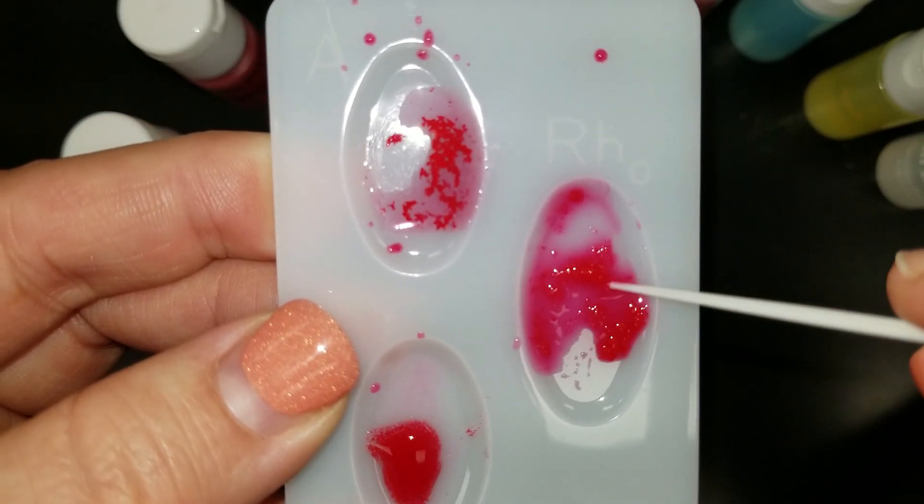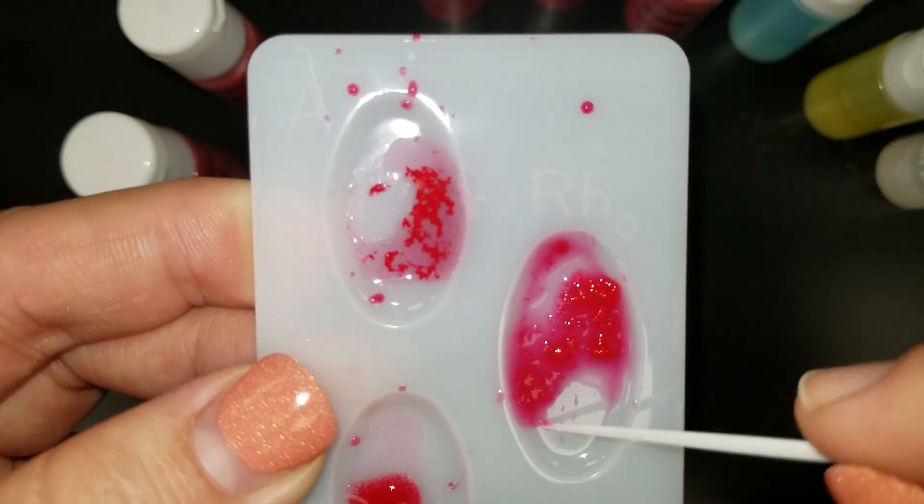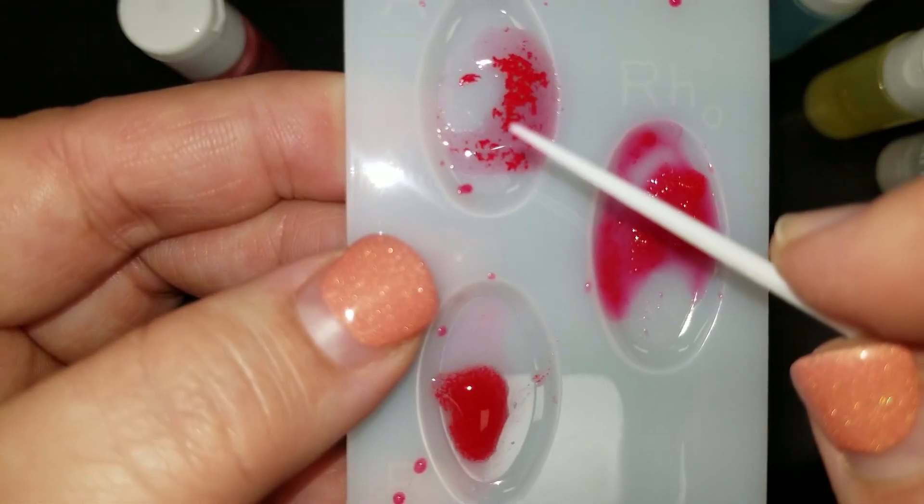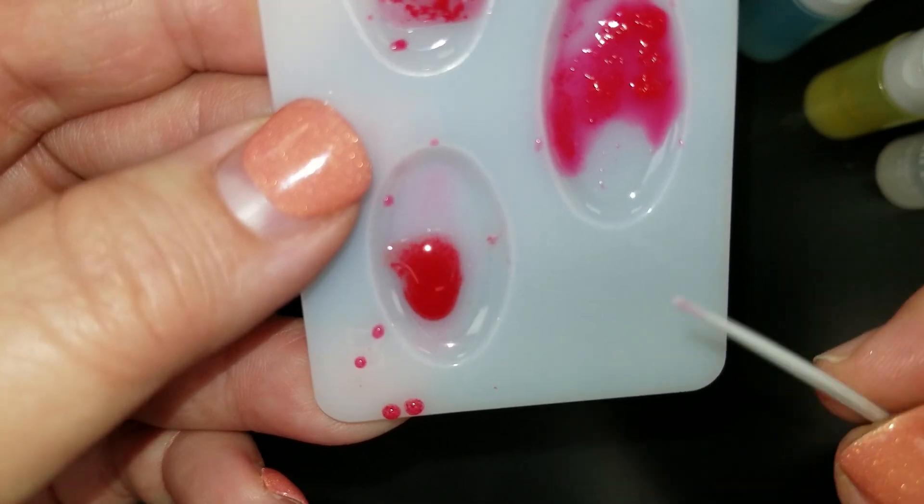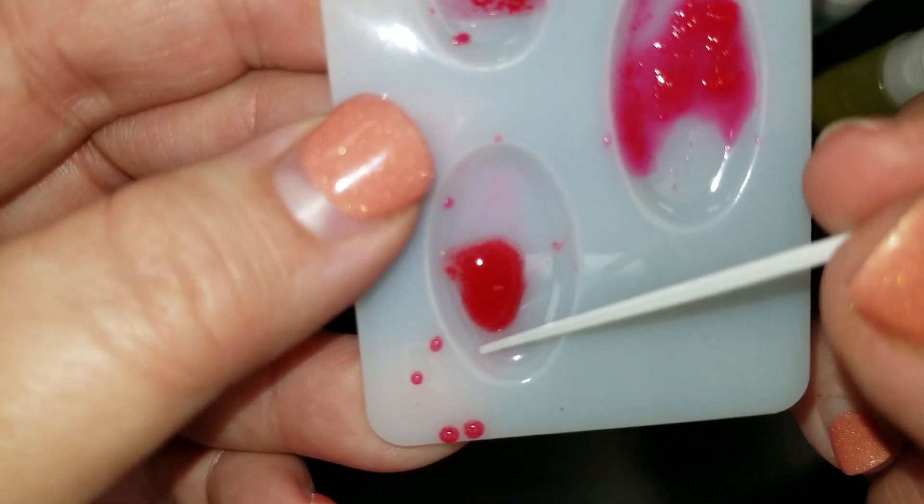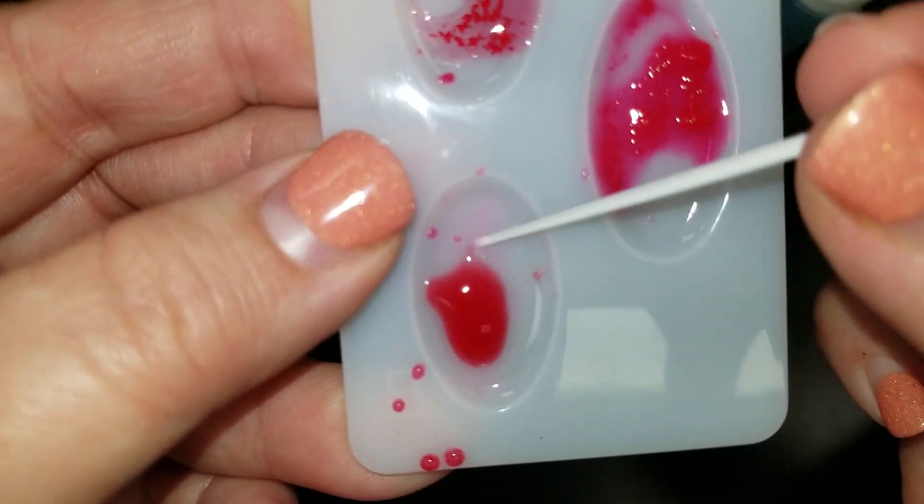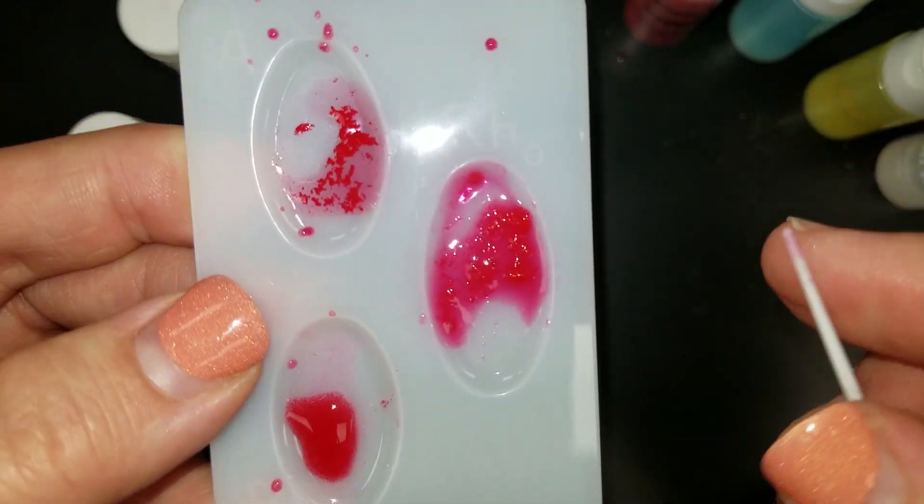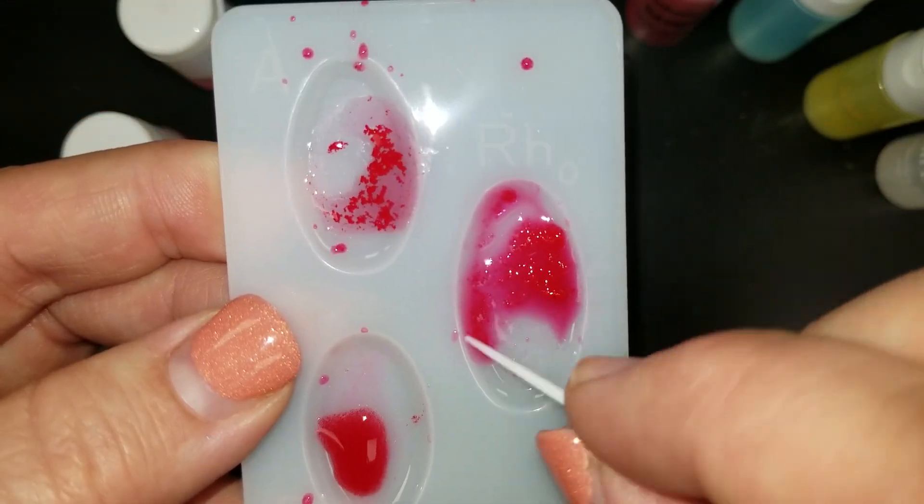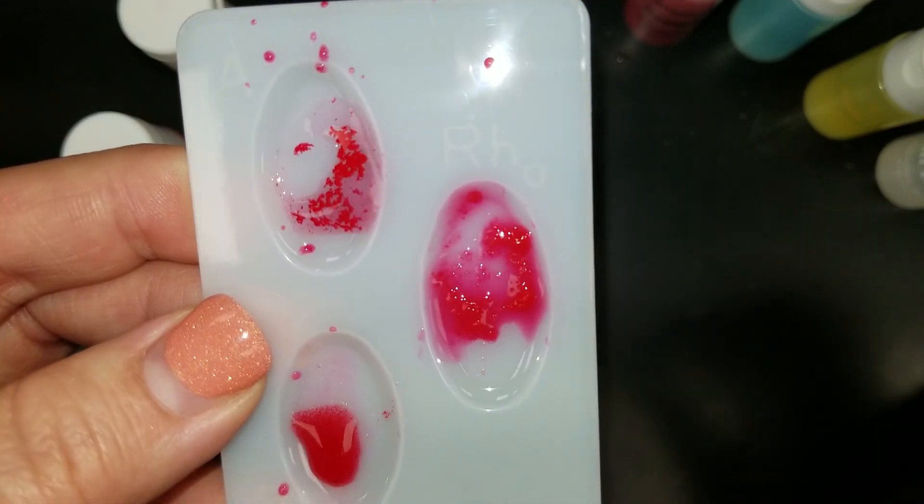So Andrea is actually positive for all three of these antigens. She has the A antigen. She has the B antigen, and again, it's kind of hard to see that on this video screen, but there are little red globules inside this larger red dot, which is a positive for B. And then for our Rh, it's just become like a little melted jello. And that's a positive for Rh.